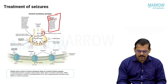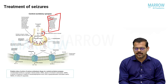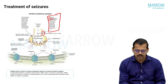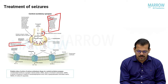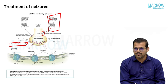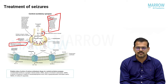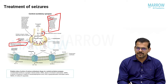Multiple drugs can inhibit the voltage-dependent calcium channel, but one particular calcium channel deserves mention: the alpha-2-delta subunit of the voltage-gated calcium channel. Two drugs particularly inhibit this channel — gabapentin and its congener pregabalin.